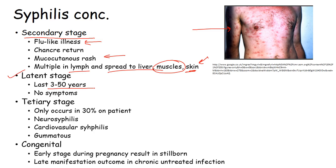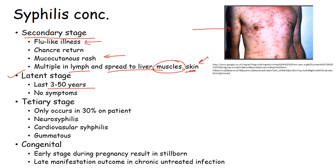Syphilis also has a latent stage that can last 3 to 50 years inside a person. In the latent stage, though the infection is present, these infective persons become carriers. Once they have sex with a healthy human being, there is a chance of developing infection. Though there are no symptoms in latent patients, it is hidden — a silent precaution to use condoms during sex.